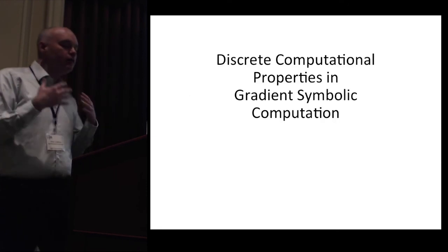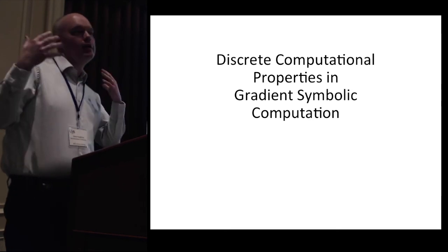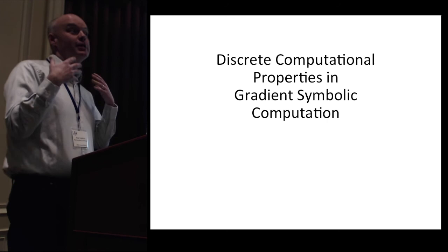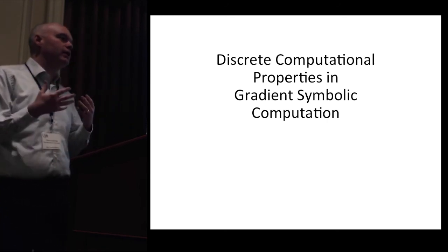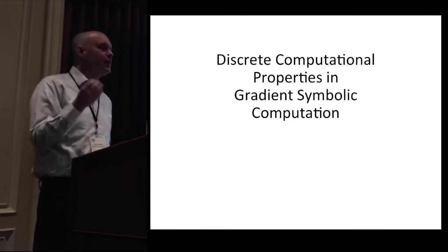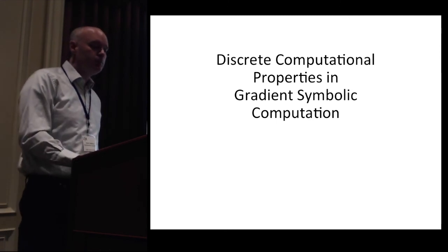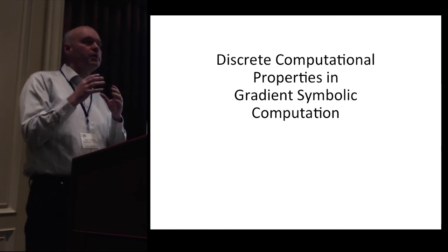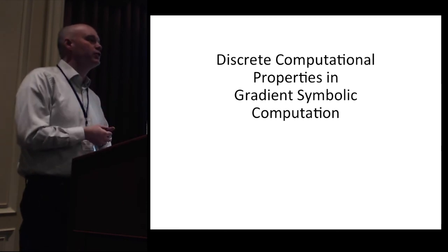We start with what we take as basic: the mind is realized in the brain. The brain is continuous and dynamic, and so the main question that arises is how we can explain the computational properties that seem inherently tied to the use of discrete representations in grammatical theory. To look at that, we'll break down the arguments for discreteness into two broad types and talk about how we address each of them in turn.